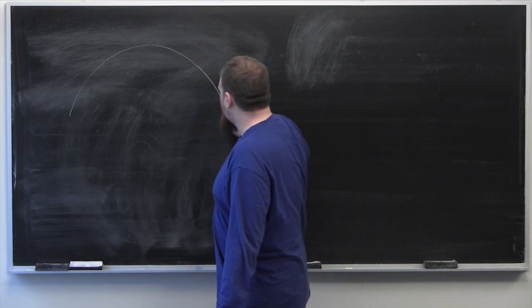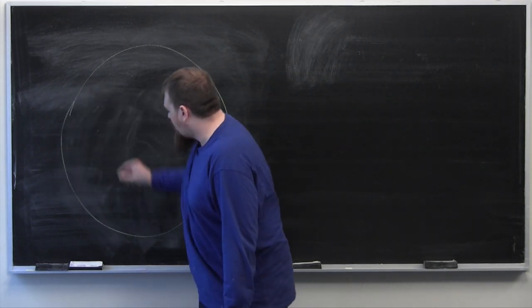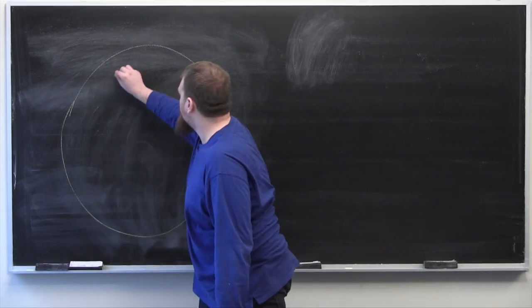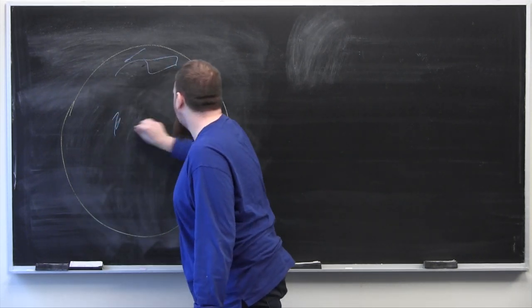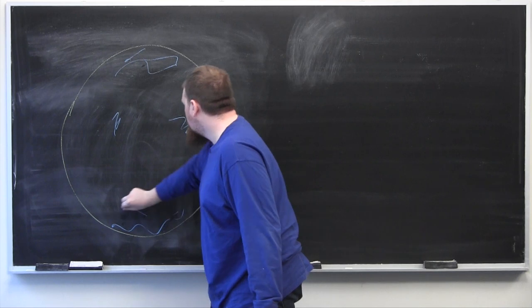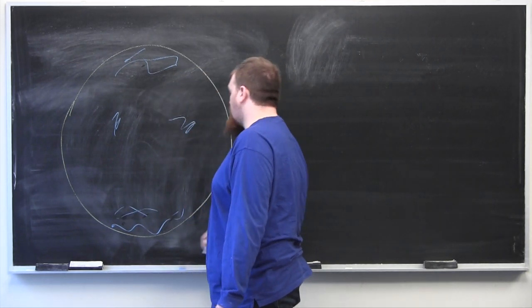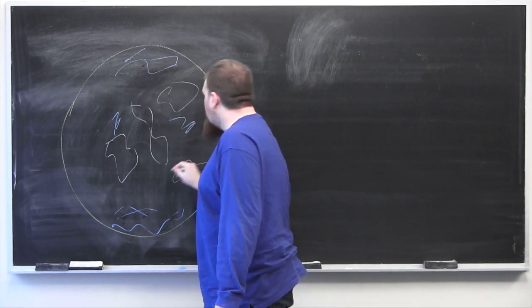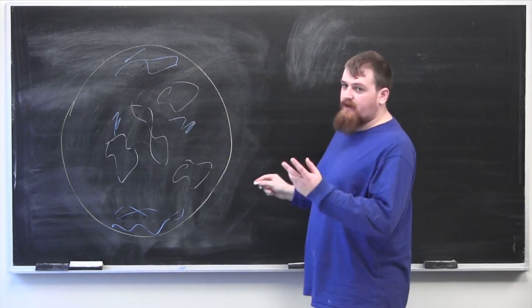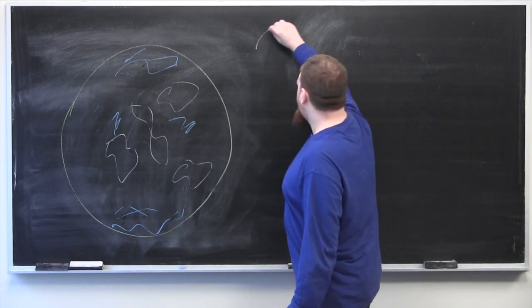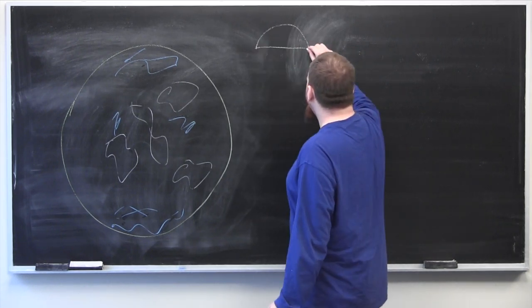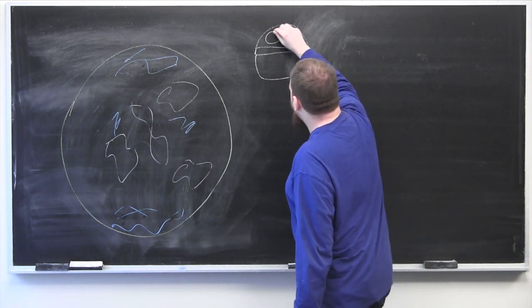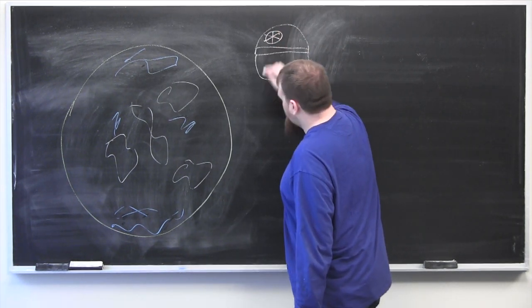So here we have the planet Alderaan, that's some oceans, some lakes, let's put in some happy little clouds. And as we all know, the planet Alderaan in the first movie gets destroyed by no moon but the Death Star.